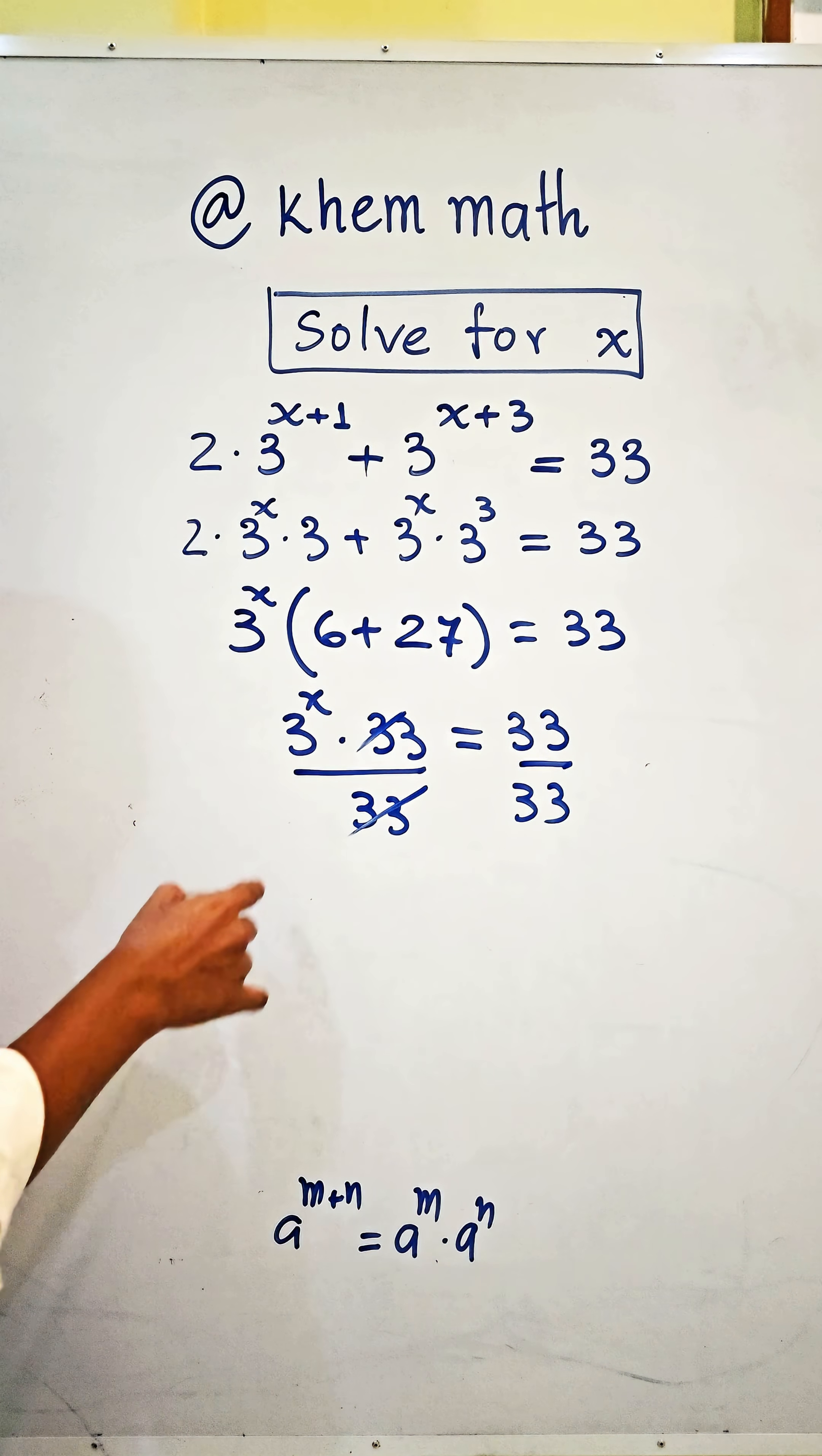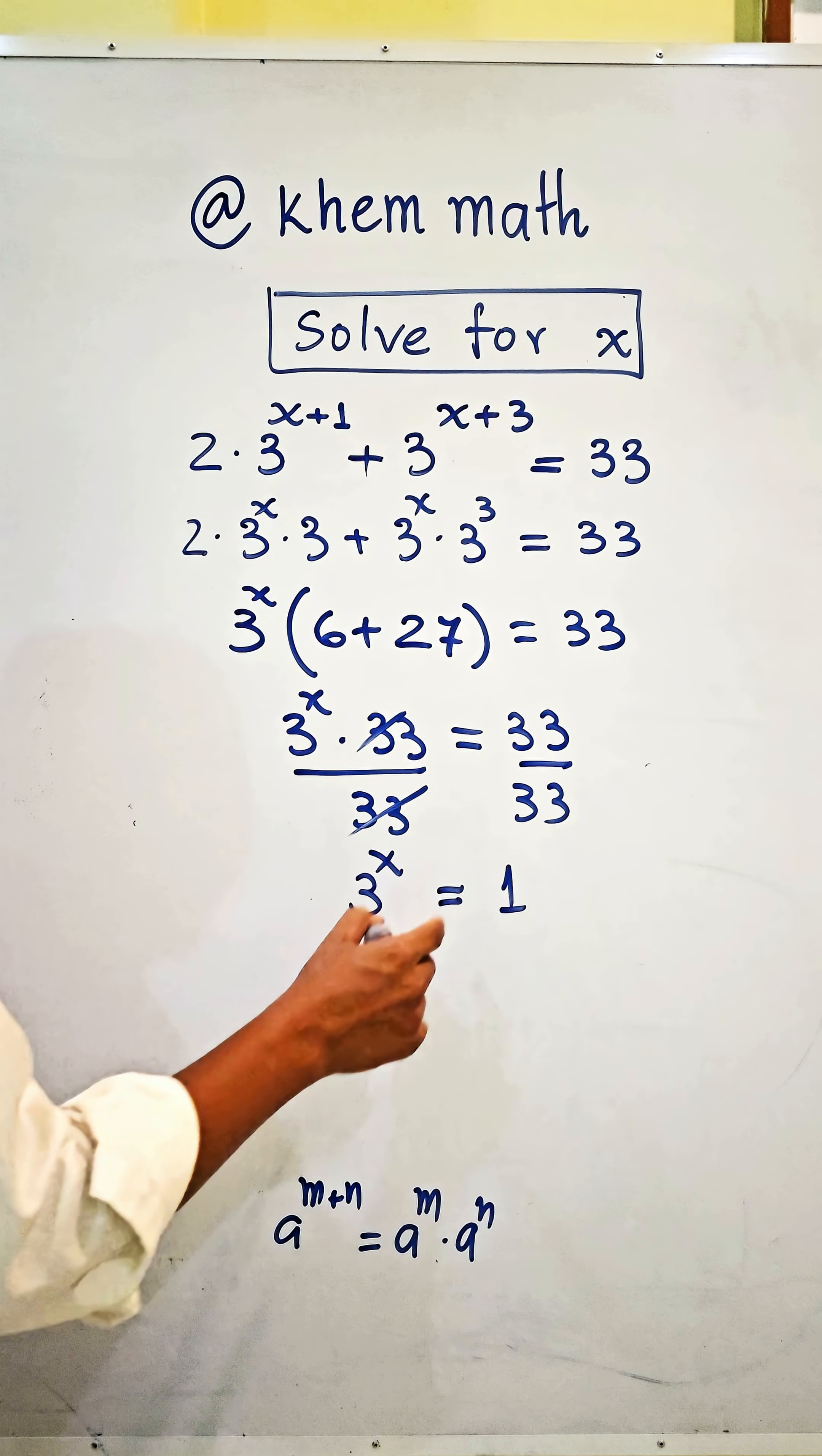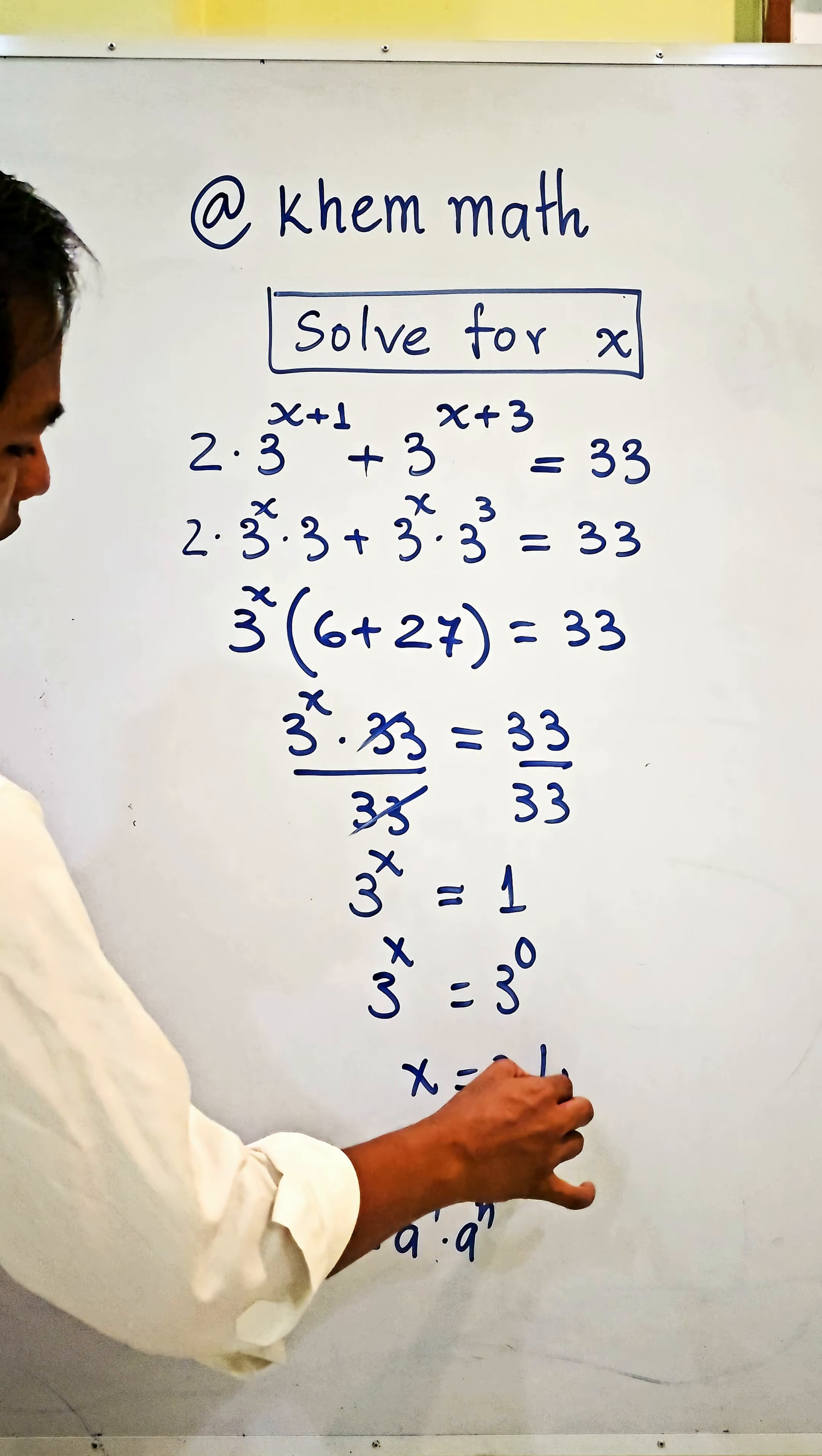Simplifying, 3 power x equals 1. And 1 also can be written as 3 power 0. We get 3 power x equals 3 power 0, so our equation gives x equals 0 as our answer.